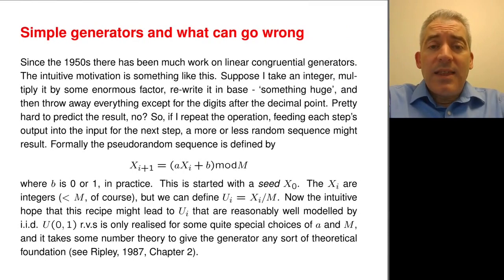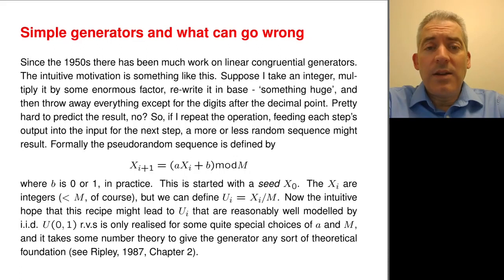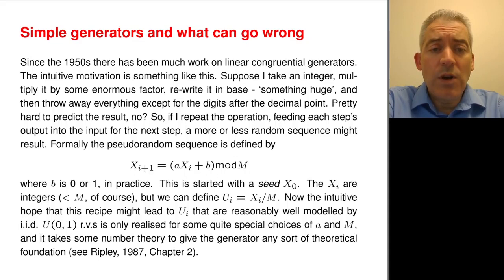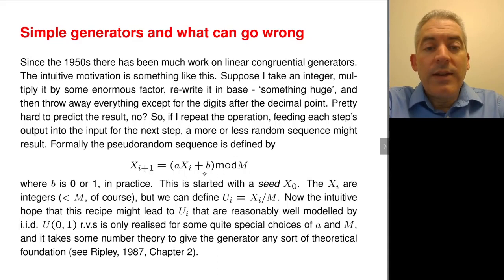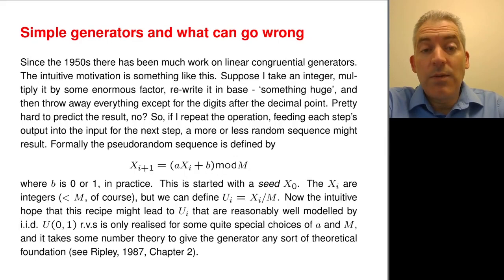Well, how do you even begin to think about this problem? If computers are fundamentally deterministic machines, how can you ever hope to get random numbers out of them? Well, you just come up with a sequence that looks random, and there are lots of ways you can do that. So let's start with a simple linear congruential generator. The equation here is the key: you want to generate a sequence of numbers, so you have a rule for generating x_{i+1} from x_i. In a linear congruential generator, you multiply x_i by a number, maybe add another number, and look at it modulo some other number.